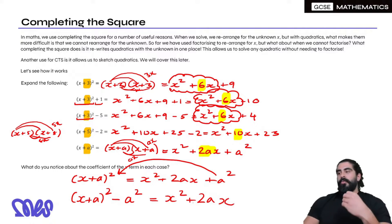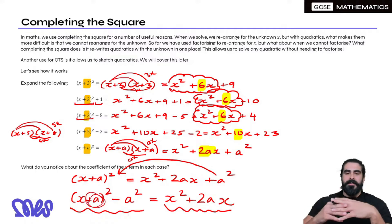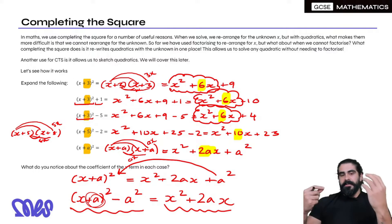Meaning we can very easily write any quadratic in completed square form by halving the coefficient of x, that's just a, and then we subtract that number squared. So I'm going to show you exactly how we do this in practice.